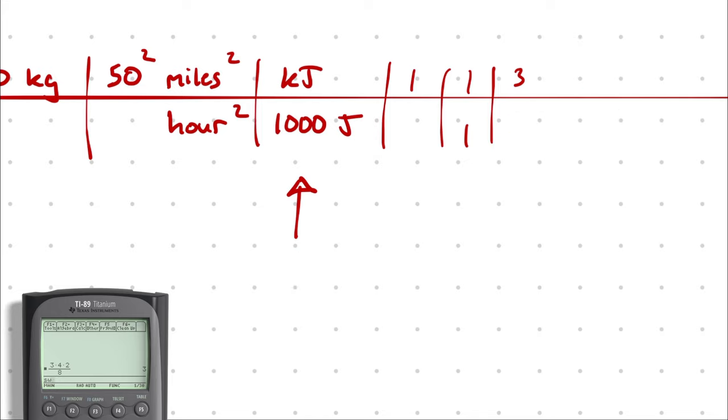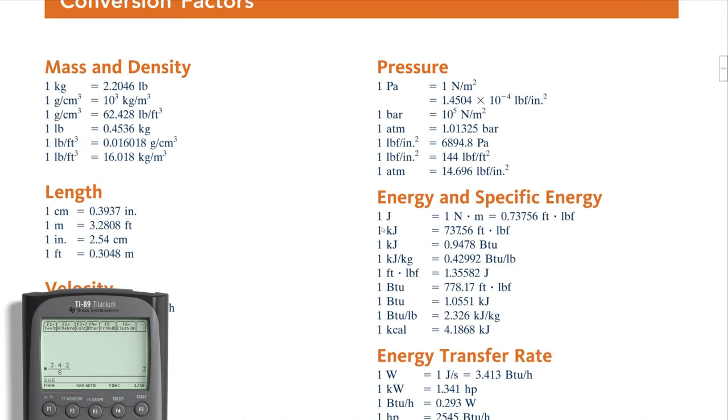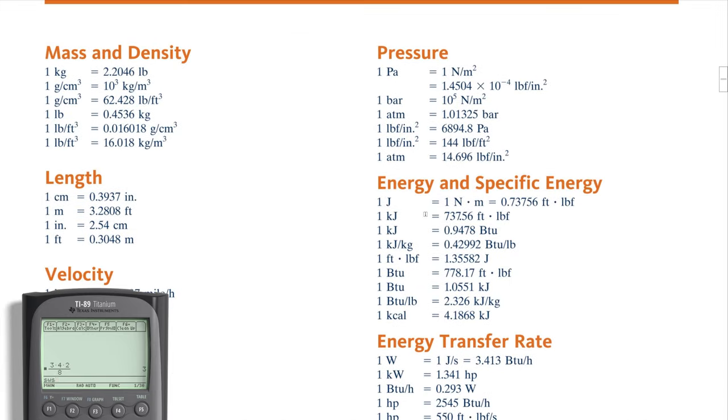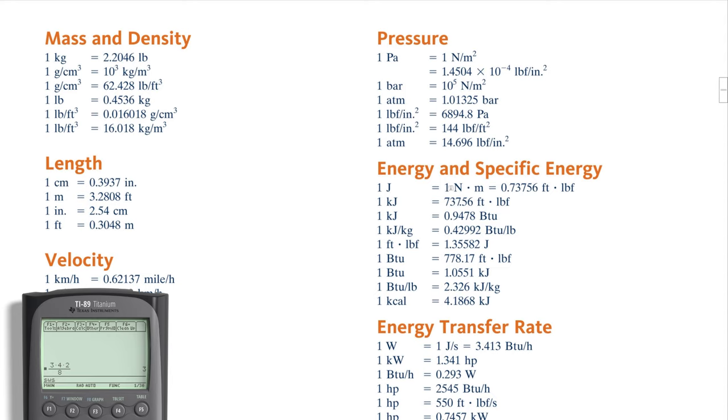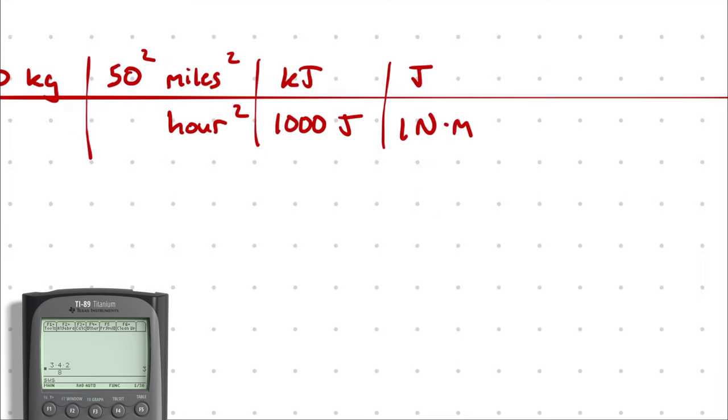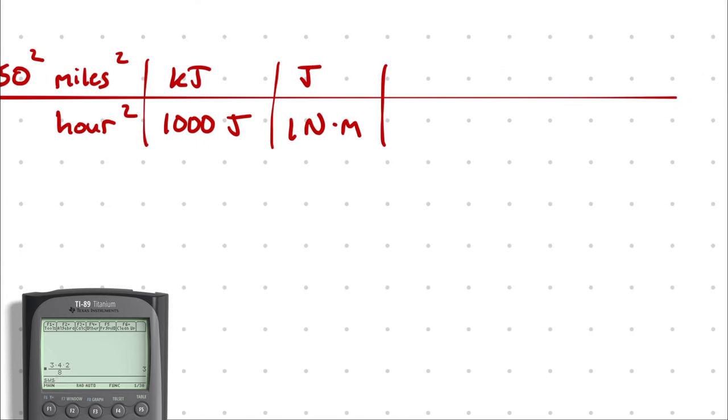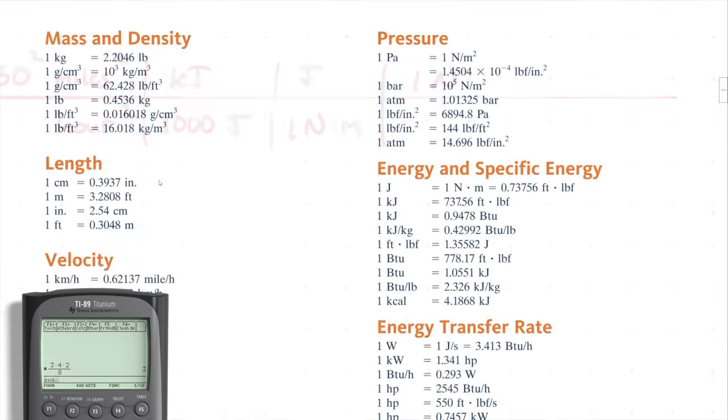Now let's keep multiplying by one. I know that a joule is one newton times a meter. If I didn't know that off the top of my head, I can see in my conversion factor sheet that one joule is equal to one newton times a meter. And then I could write one newton is equivalent to one kilogram meter per second squared.